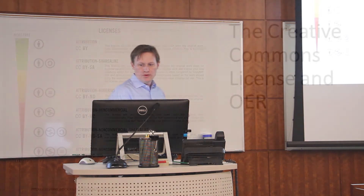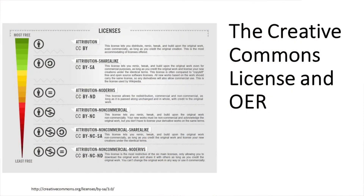The Creative Commons license is a powerful concept for providing academic freedom. It lets you control how your content is distributed and freely shared, with a variety of levels depending on what you wish to do. For example, say you write a scholarly book and you want it widely available, but you don't want anyone editing or reusing it. You can use an Attribution Non-Commercial No-Derivatives license — very restrictive, but your work can be freely distributed worldwide with your authorship information intact.